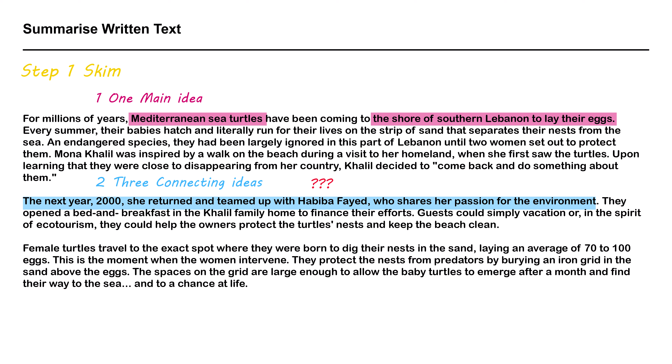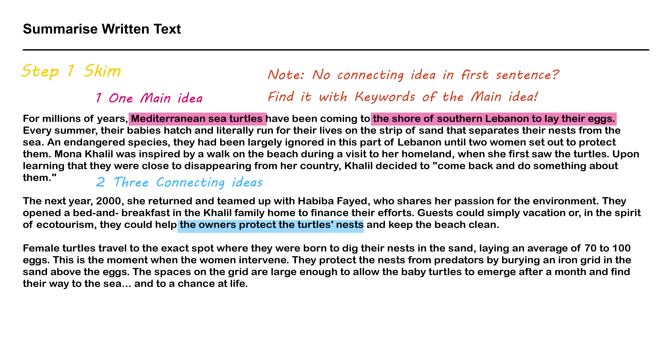Second, now let's look for connecting ideas from the first sentence of the second paragraph. But wait a minute — this sentence has no clear connecting idea. It's not about turtles. If you can't find a connecting idea in the first sentence, you just have to check the whole paragraph. So in this text, the connecting idea is actually: the owners protect the turtles' nests. When you try to find connecting ideas from a whole paragraph, look for it with key words from the main idea, like 'turtles.' That's often easier.